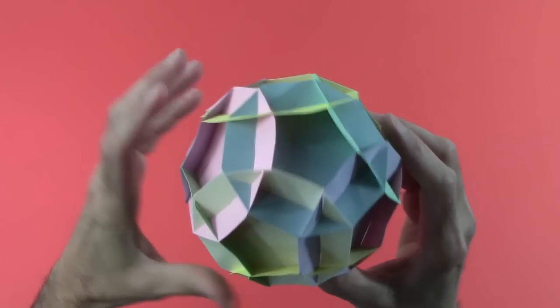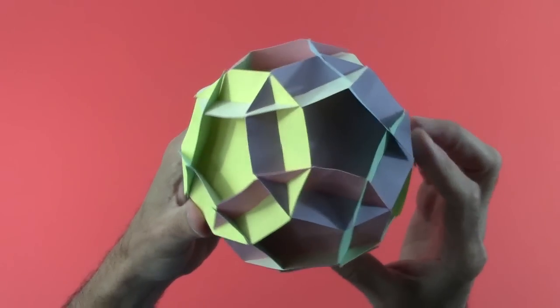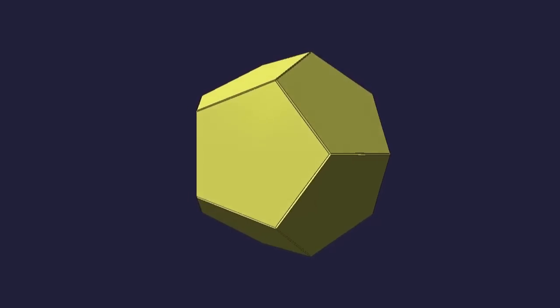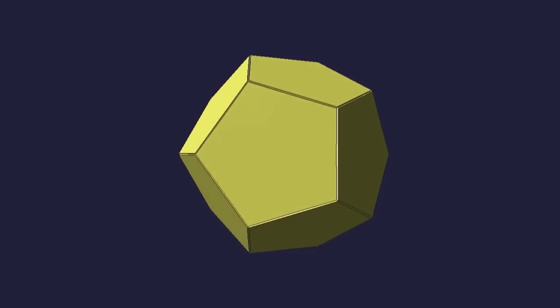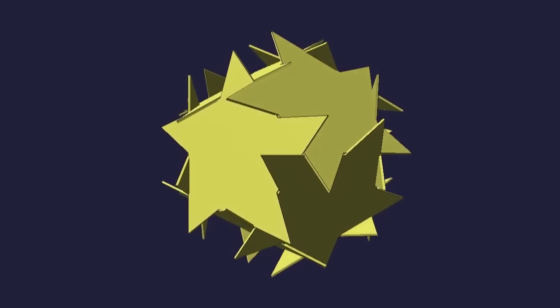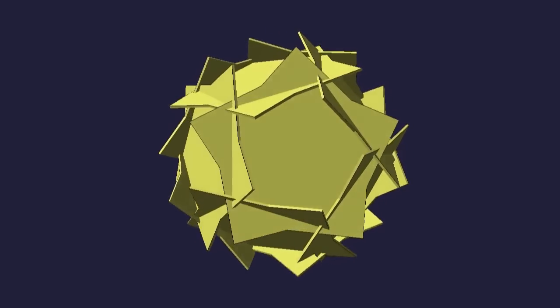This third construction is made from twelve decagons. That's regular ten-sided polygons. To understand it mathematically, just start with the regular dodecahedron, which consists of twelve pentagons. Then expand and adjust the pentagons until there are ten vertices instead of five, arranged as a regular decagon.